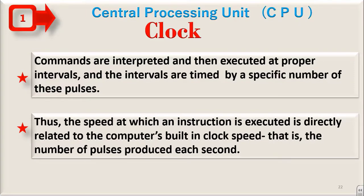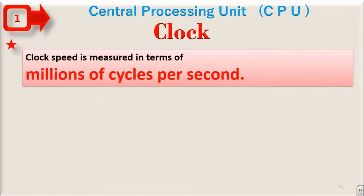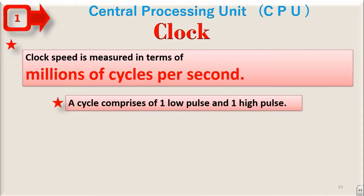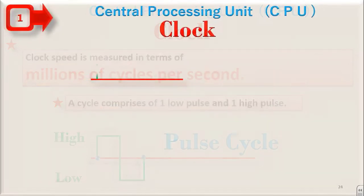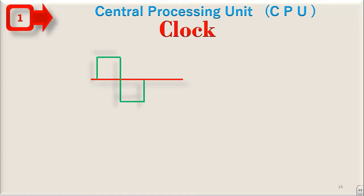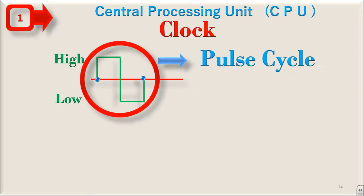Thus, the speed at which an instruction is executed is directly related to the computer's built-in clock speed, i.e. the number of pulses produced each second. Clock speed is measured in terms of millions of cycles per second. A cycle comprises of one low pulse and one high pulse. One high and one low, it makes one pulse cycle.